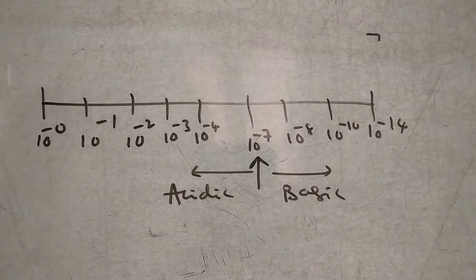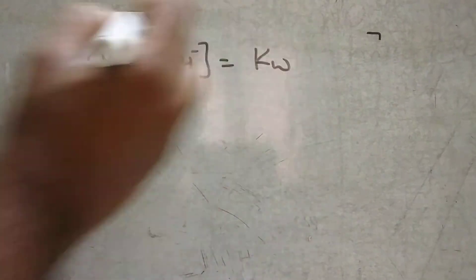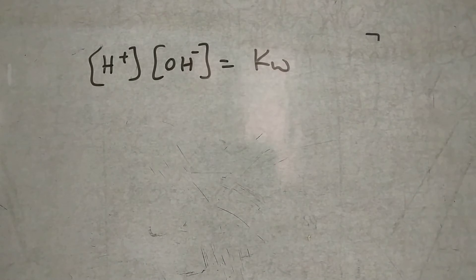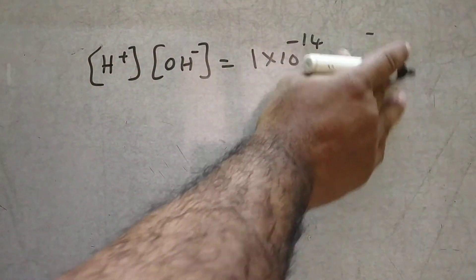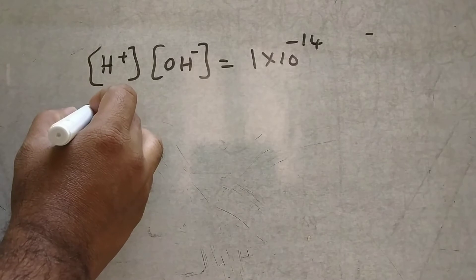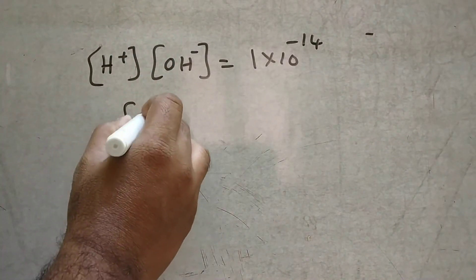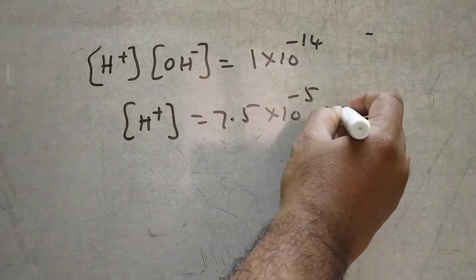Now we will go into the details of the problems — how to calculate H3O plus ions. Generally, the H plus concentration multiplied by the OH minus concentration equals KW, that is 1 into 10 to the power of minus 14. Suppose the concentration of H3O plus ions is given as 7.5 into 10 to the power of minus 5 M. Then you calculate the concentration of OH minus, and substitute in the equation.